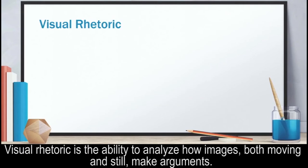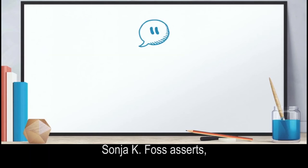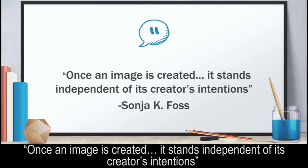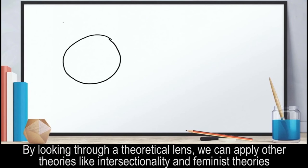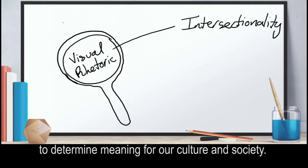Visual rhetoric is the ability to analyze how images, both moving and still, make arguments. Looking through this lens allows us to read images and get meaning beyond what's simply shown. Sonia K. Foss asserts, once an image is created, it stands independent of its creator's intentions. By looking through a theoretical lens, we can apply other theories, like intersectionality and feminist theories, to determine meaning for our culture and society.